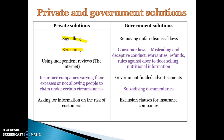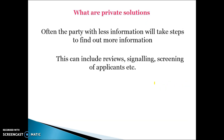In terms of government solutions, you can remove unfair dismissal laws — that's related to hiring people that aren't any good, so you can get rid of them quickly. There are things like consumer laws, which prevent misleading and deceptive conduct, stopping you from selling things at a price above what they should be and ensuring full disclosure about the quality of products. Warranties, refunds, and advertisements so that people can have more information about products.